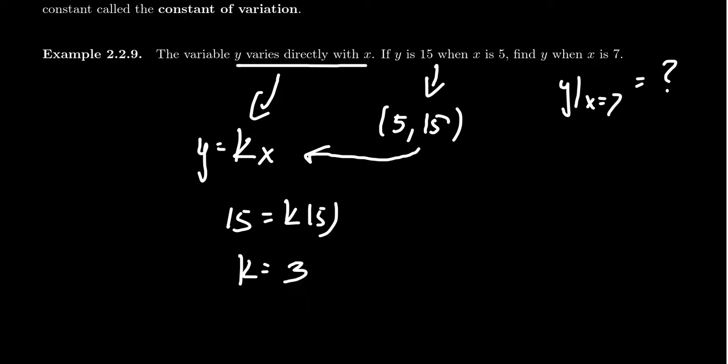So we have k equals 3. And so now we have to solve the equation y when x is 7 here. Well, since we know the k value is always going to be 3, we have to solve the equation y equals 3x. And so if x is 7, we get that y is going to equal 21.